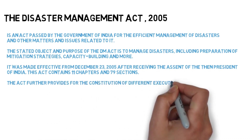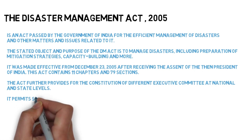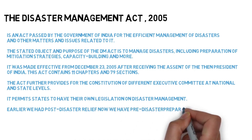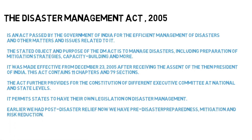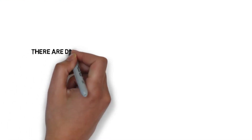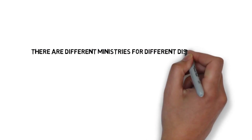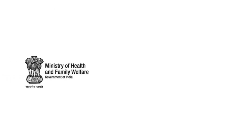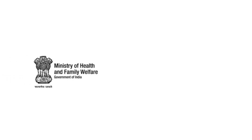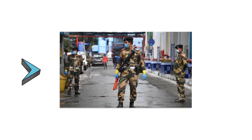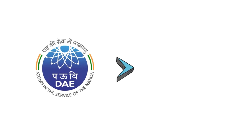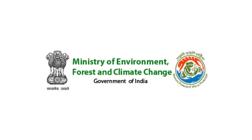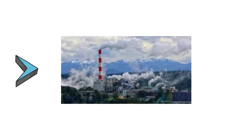It further provides for the constitution of different executive committees at national and state levels. Earlier we had only post-disaster relief, but now at present we have pre-disaster preparedness, mitigation and risk reduction. There are different ministries for different disasters, but the Ministry of Home Affairs is the only nodal head of all disaster management. Health and Family Welfare manages biological disaster, Department of Atomic Energy manages nuclear disaster, Civil Aviation manages airplane-related disaster, and Environment and Forest manages chemical disaster.